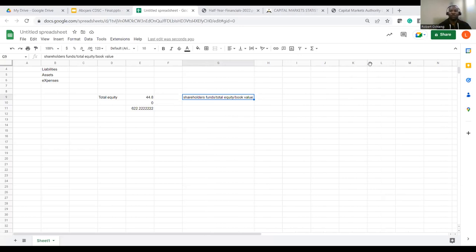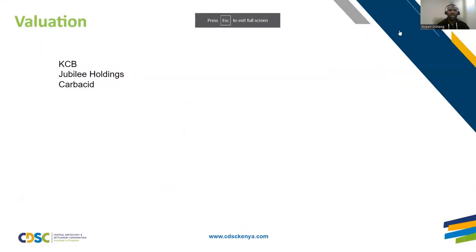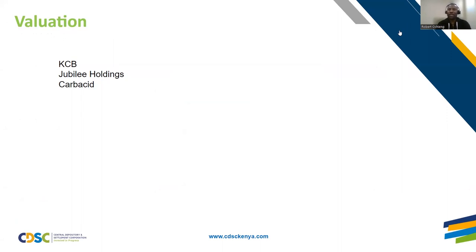The current share price of Jubilee is around 200 shillings, while the book value per share is approximately 611 shillings — suggesting Jubilee is undervalued by the stock market. This is just a basic example; more sophisticated valuation methods will be covered in future sessions. The overall process is: business analysis, competitive analysis, financial analysis over five to ten years, then valuation — and if it makes sense, make your investment decision.